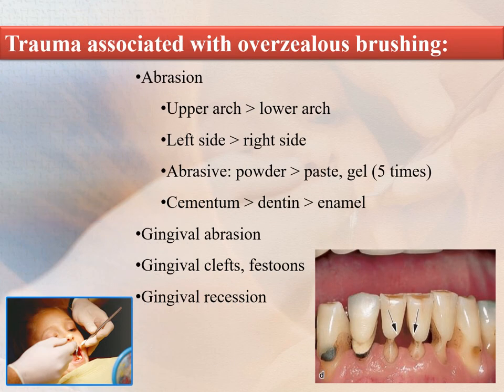Overzealous brushing leads to trauma resulting in abrasion, seen more commonly in the upper arch compared to the lower arch, and on the left side compared to the right side in right-handed people. It is more common with abrasive powder compared to paste or gel, and more in cementum compared to dentine and enamel. Other lesions observed include gingival clefts, festoons, and gingival recession.